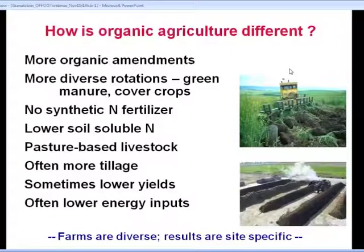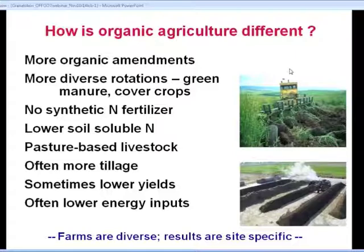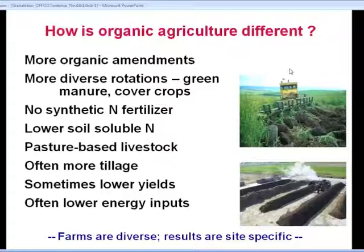Dave has introduced some general agriculture principles. The question is how different is organic agriculture — what are those things that might lead to very different outcomes, positive or negative, from organic systems? Here's a list of things that are clearly different: typically we will see more organic amendments being brought into the system, whether compost or green manures put back into the soil, perhaps more cover crops, and more diversity in the rotation, which changes the nature of residues and the carbon going back into the system.